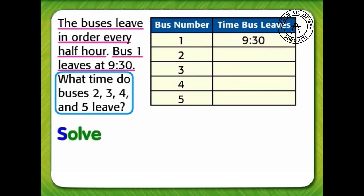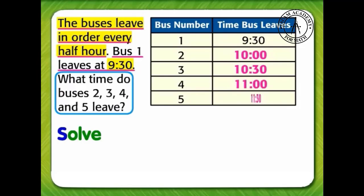Now it's time to solve the problem. The problem tells us that the buses leave in order every half hour. Bus 1 leaves at 9:30. So bus 2 will leave a half hour later at 10 o'clock. Bus 3 leaves a half hour later at half past 10, or 10:30. Bus 4 leaves at 11 o'clock, which is a half hour later. And bus 5 leaves at half past 11, or 11:30.